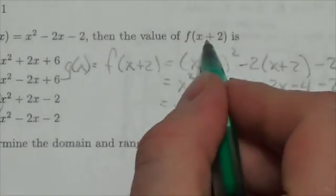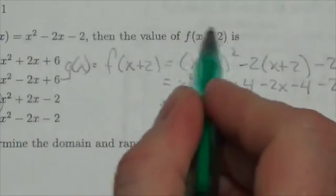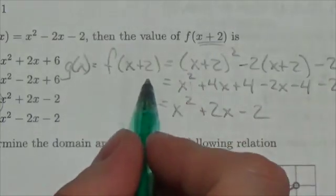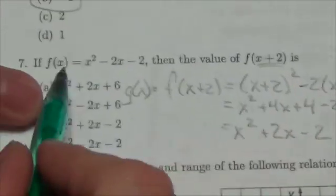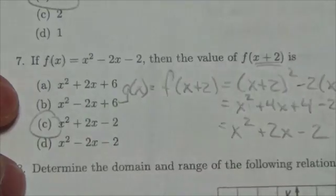But just understand that when I have that, whatever shows up inside the parentheses, that is what takes the place of the independent variable in function notation.